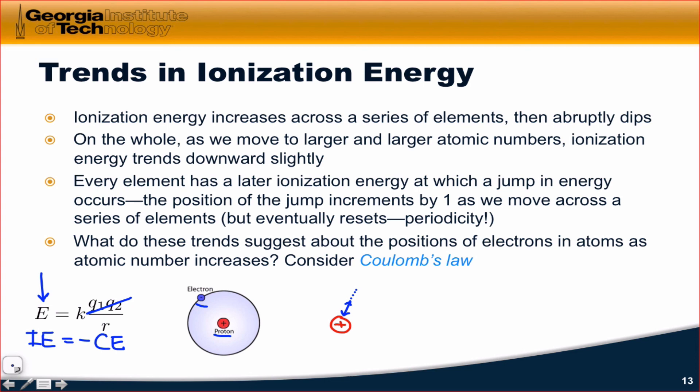But then we see an abrupt dip, an abrupt decrease in the ionization energy, and that means that R increases. If the Coulombic energy goes down, that means R must increase. There's a very large jump to a much larger distance, but we again kind of restart this process of adding electrons that are progressively a little bit closer to the nucleus.